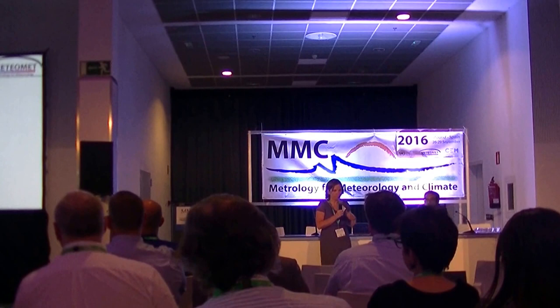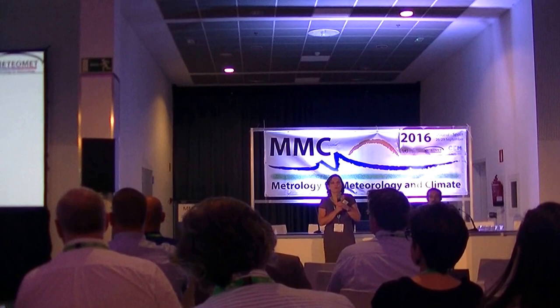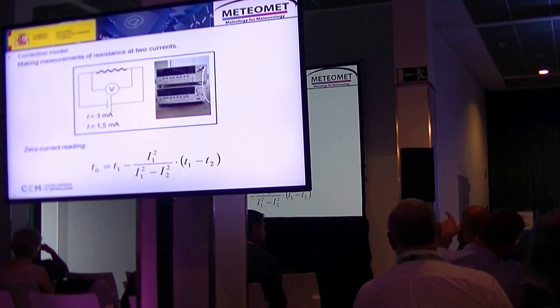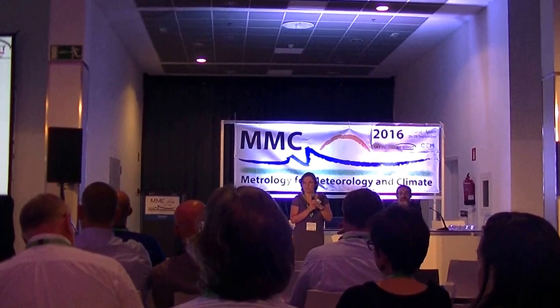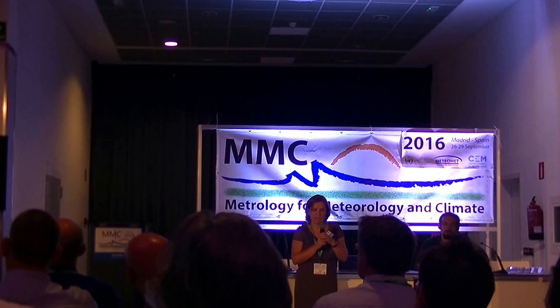The correction model used to evaluate the self-heating error is extrapolation by making measurements with two currents. We mainly performed measurements with two currents: 3 milliamps and 1.5 milliamps, measuring the voltage drop across the resistance with a nanovoltmeter.